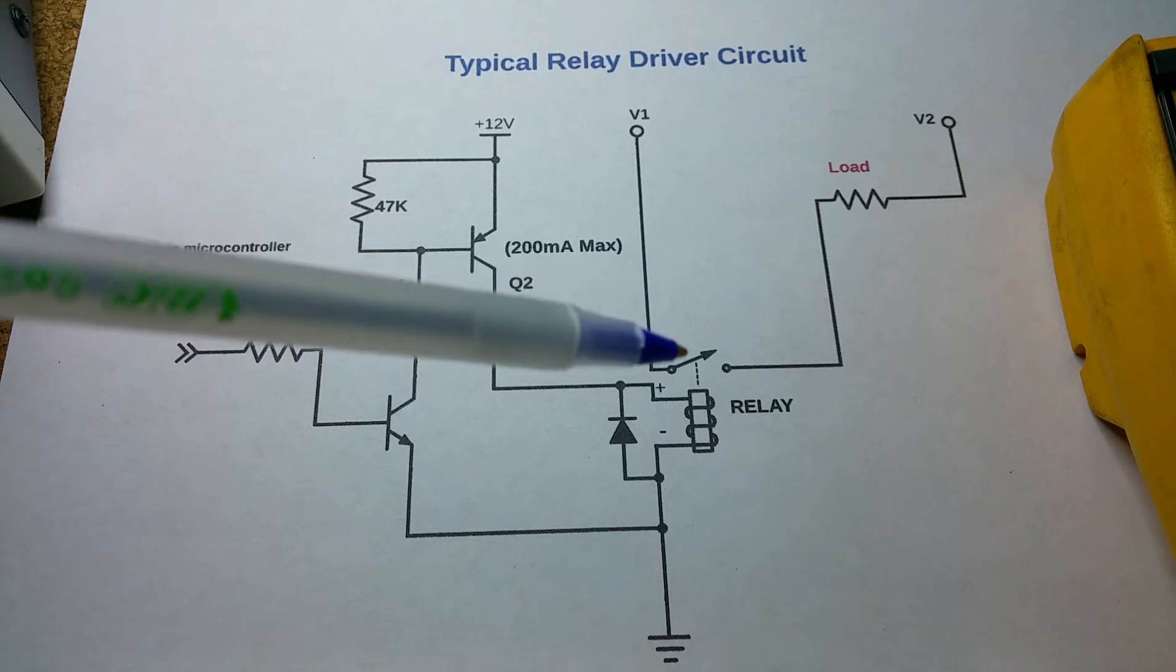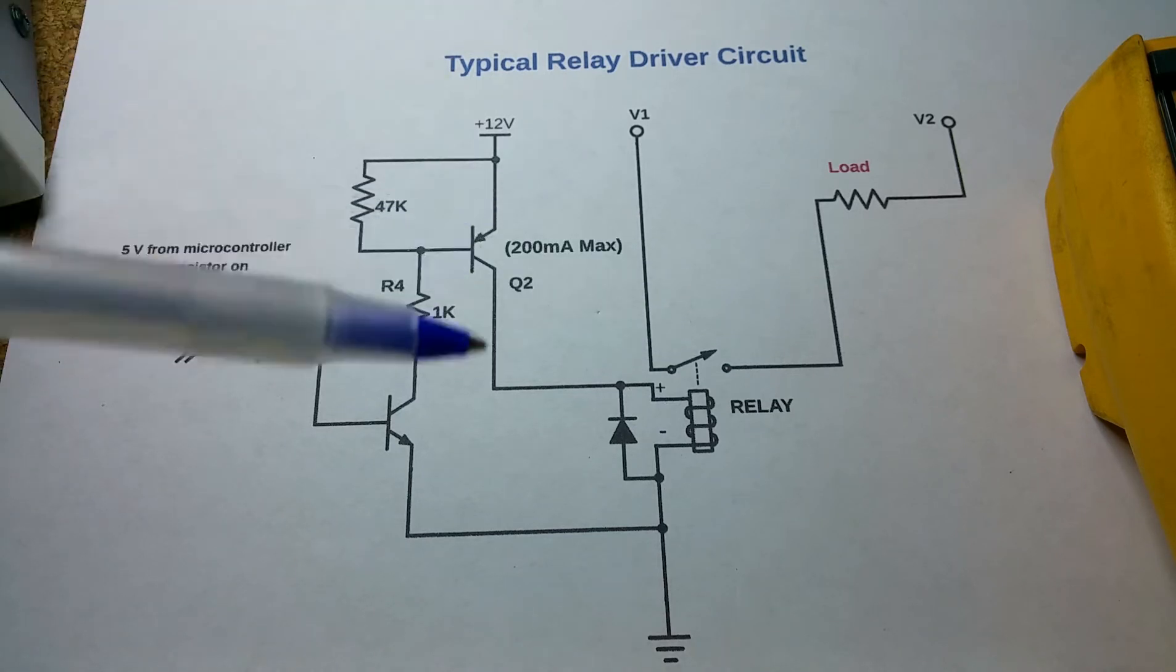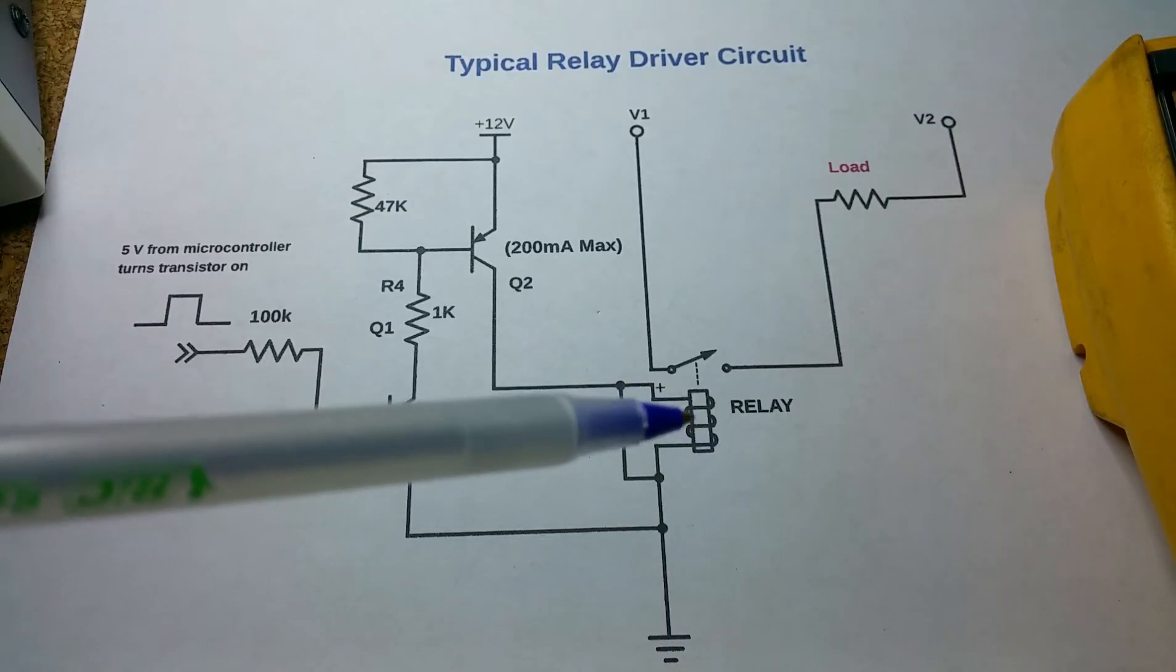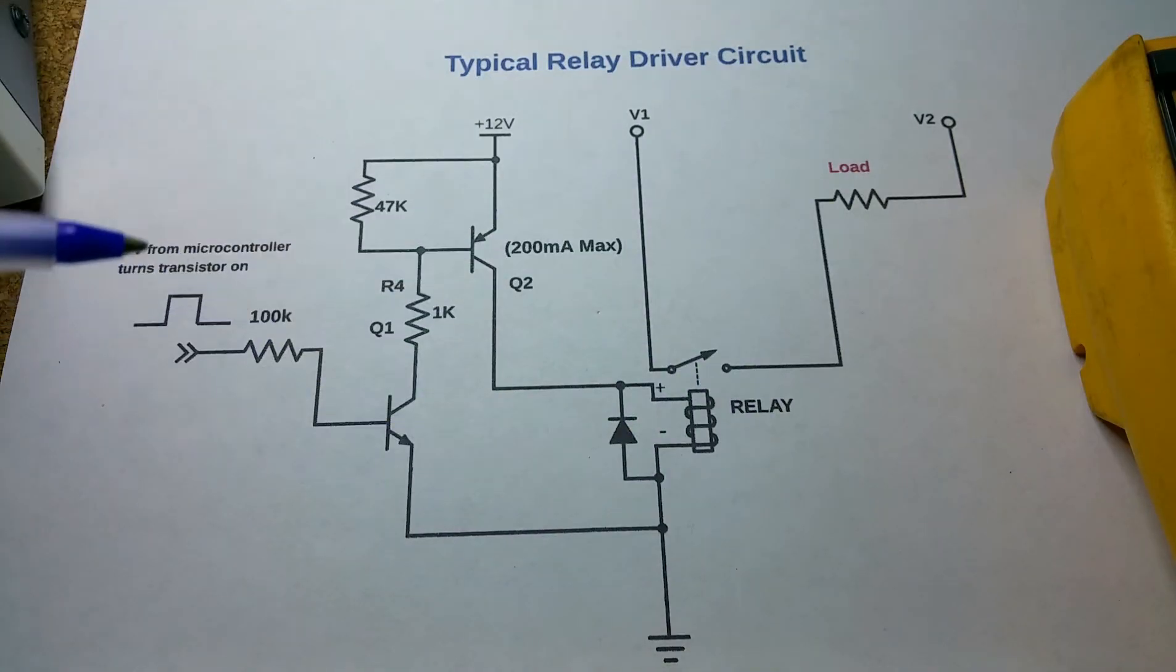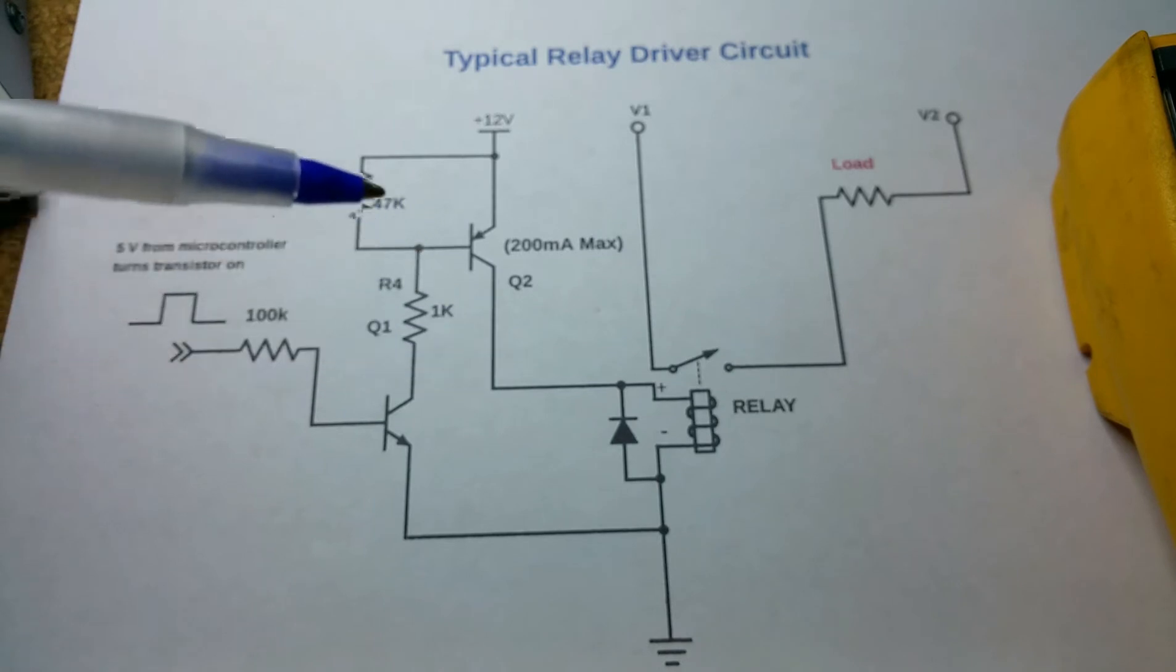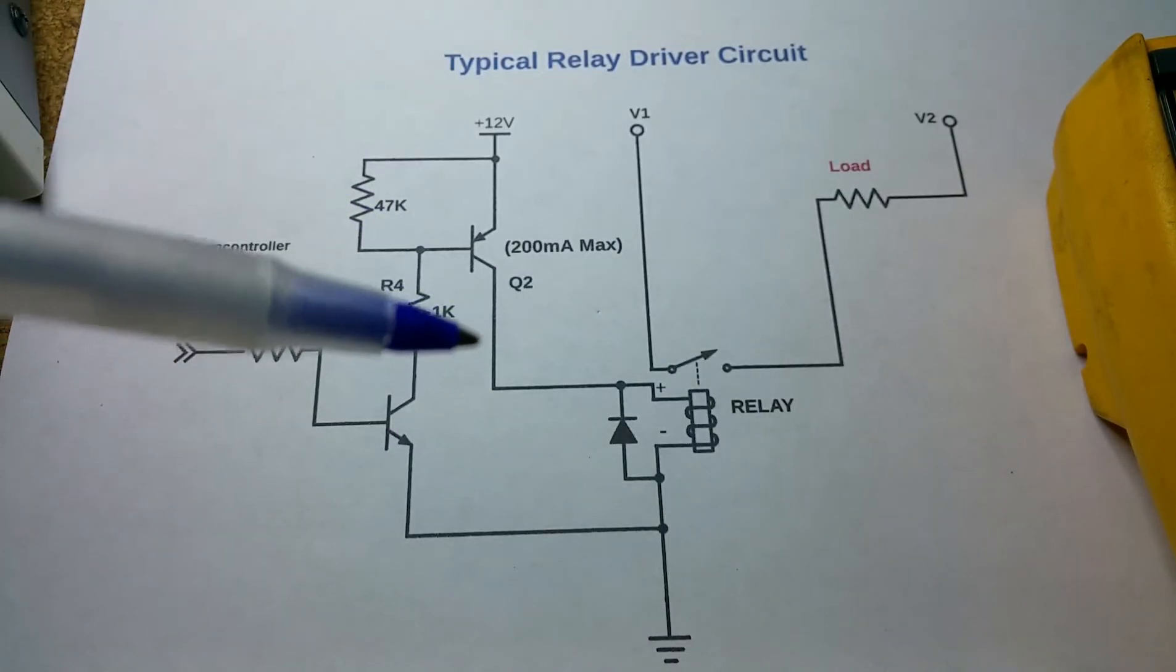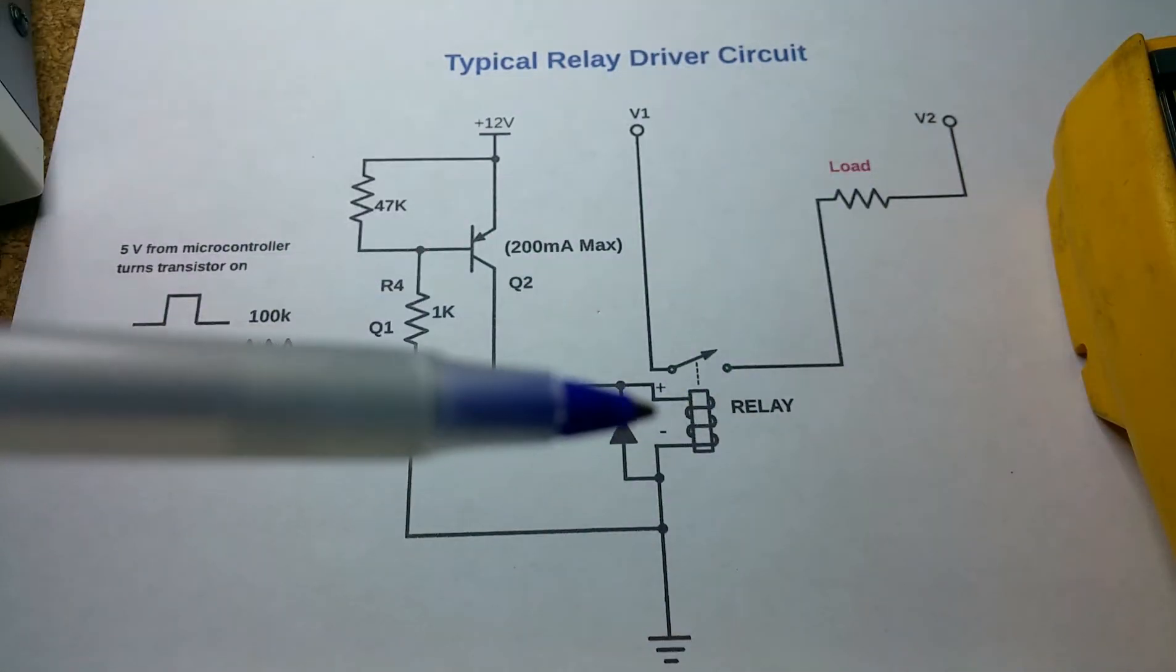Another thing that can happen is the coil can open, and I do see that happen sometimes. Obviously it really just won't work anymore. You'll turn the oven on or whatever and you'll get voltage—you'll see voltages change over here—but you'll never see this voltage go to zero because there's nothing to pull it down. The relay is open.